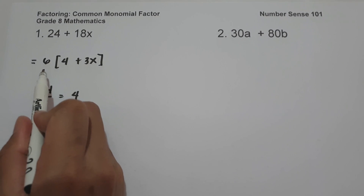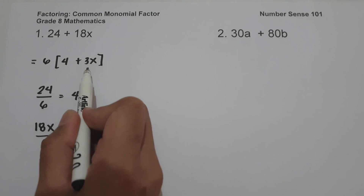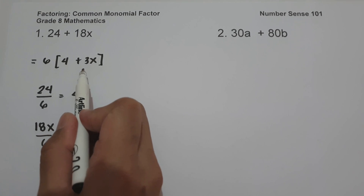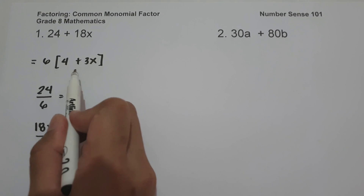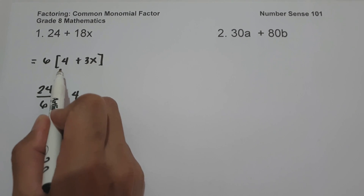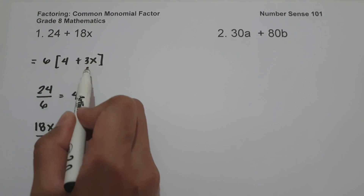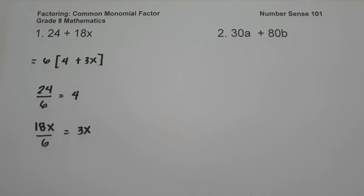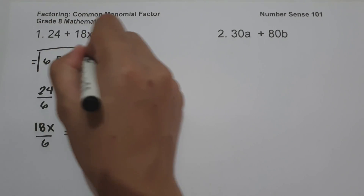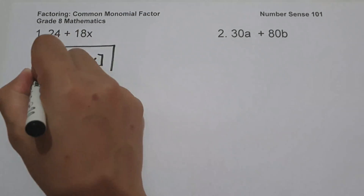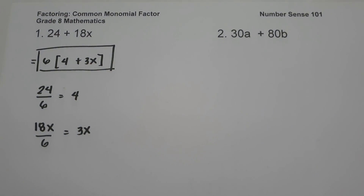6 is what we call the greatest common monomial factor. 4 plus 3x is what we call the quotient of the polynomial. And 6 times the quantity of 4 plus 3x is what we call the factored form, and this will be our answer. On example number 2 we have 30a plus 80b.